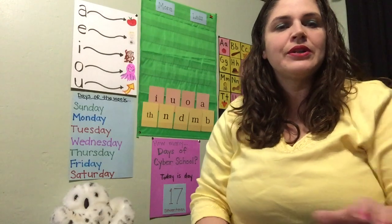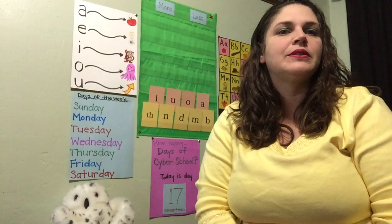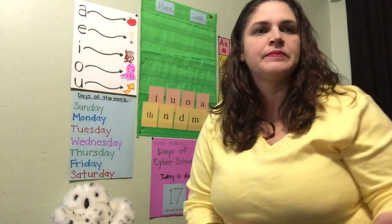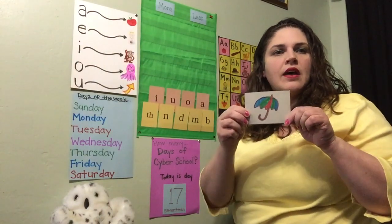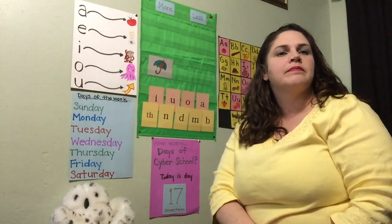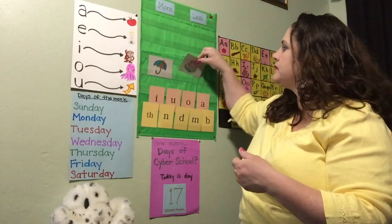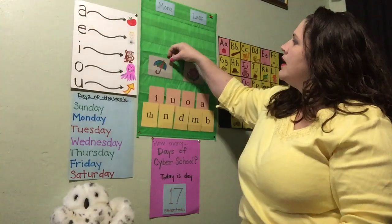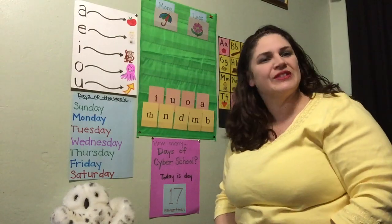This morning we're going to start with a syllable sort. We're going to look at two picture cards. We're going to clap out their syllables and decide which one has more or which one has less syllables. Umbrella — let's clap it out. Umbrella. Our next picture card is flower. Flower. Which one had more? Umbrella had more, flower had less syllables. Great job.